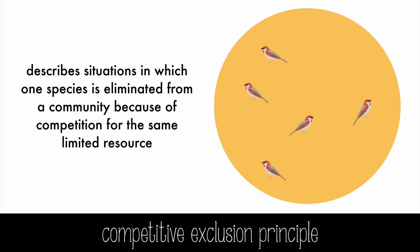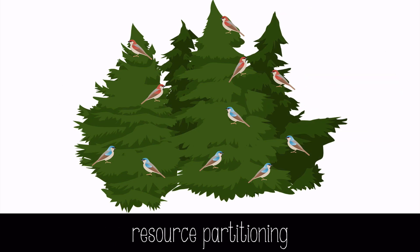In order to avoid too much interspecific competition, the birds in this habitat may choose to do something else: resource partitioning. When similar species coexist, each species may avoid competition with others by using a specific part of an available resource. This is called resource partitioning.